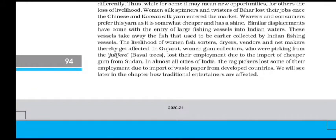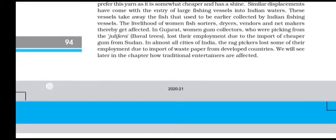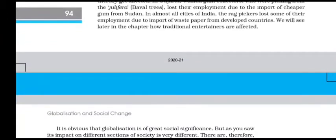Women silk spinners and twisters of Bihar lost their jobs once Chinese and Korean silk yarn entered the market. Weavers and consumers prefer this yarn as it is somewhat cheaper and has a shine. Similar displacement has come with the entry of large fishing vessels into Indian waters, taking away fish that used to be collected by Indian fishing vessels. The livelihood of women fish sorters, dryers, vendors and net makers is thereby affected. In Gujarat, women gum collectors lost their employment due to the import of cheaper gum from Sudan. In almost all cities of India, rag pickers lost some of their employment due to the import of waste paper from developed countries.